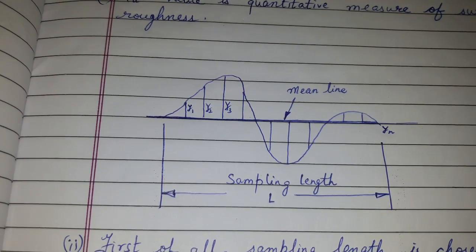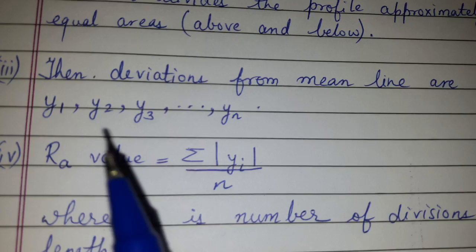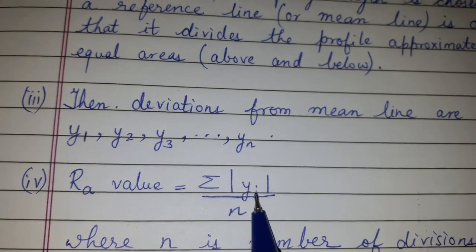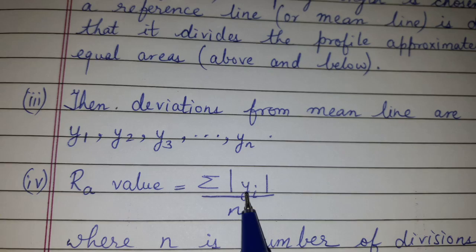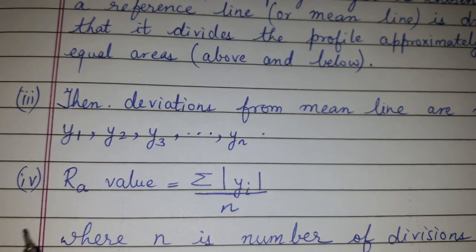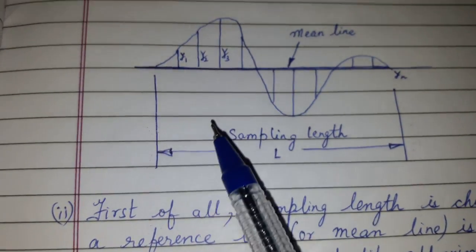Then Ra value is calculated with this formula: Ra value is equal to summation of yi upon n, where yi means it can take values y1, y2, y3, and n is the number of divisions.